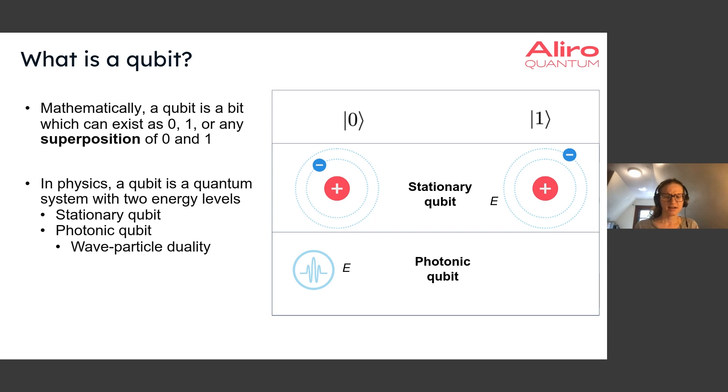Stationary qubits and photonic qubits can exist independently, but quantum networks require both. Exchanges of quantum information between the two must occur in a quantum network in order to communicate between both types of qubits.